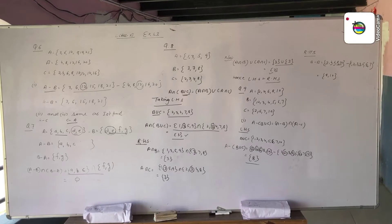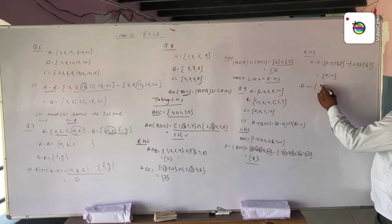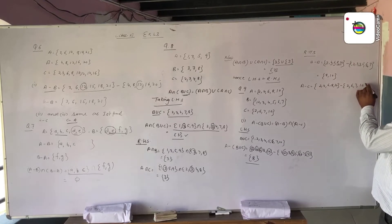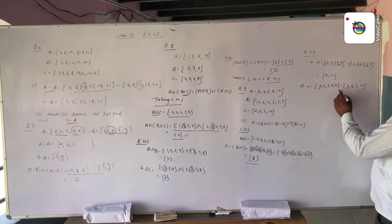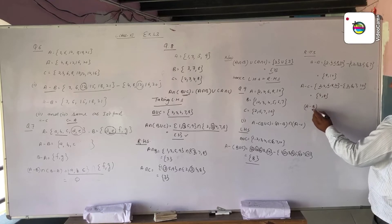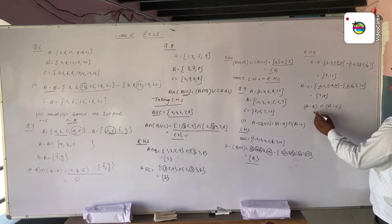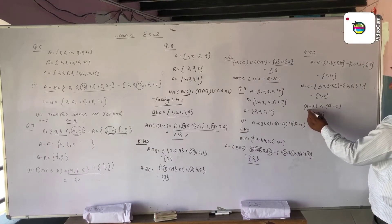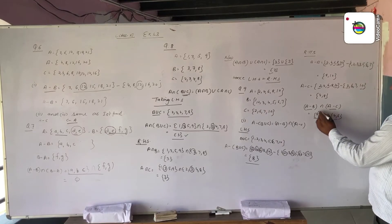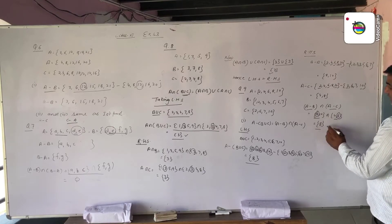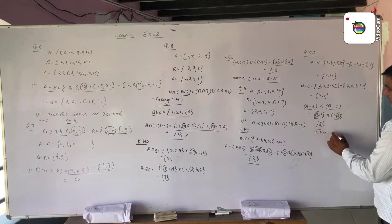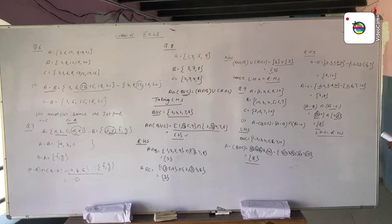Now A difference C: element of A is 2, 4, 6, 8, 10 and C is 2, 6, 7, 10. Elements 2, 6, and 10 are common, so A difference C = {4, 8}. Now (A difference B) intersection (A difference C) = {8, 10} intersection {4, 8}. The common element is 8, so the result is {8}. Left hand side equals right hand side.